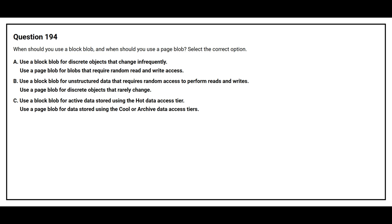Option C: Use a block blob for active data stored using the hot data access tier; use a base blob for data stored using the cool or archived data access tiers. The correct answer is Option A: Use the block blob for discrete objects that change infrequently; use a base blob for blobs that require random read and write access.